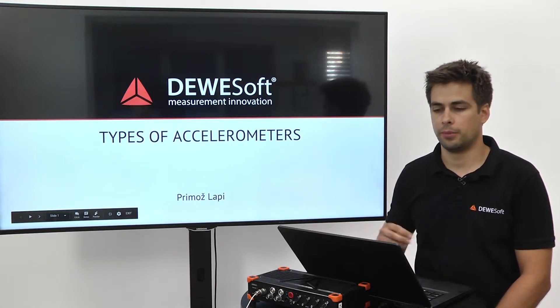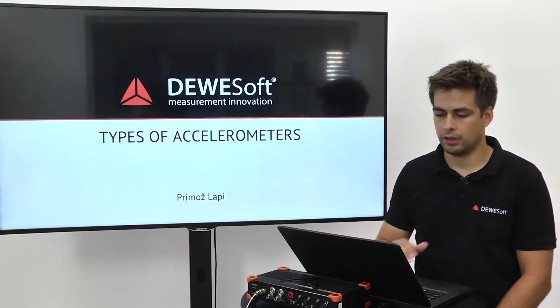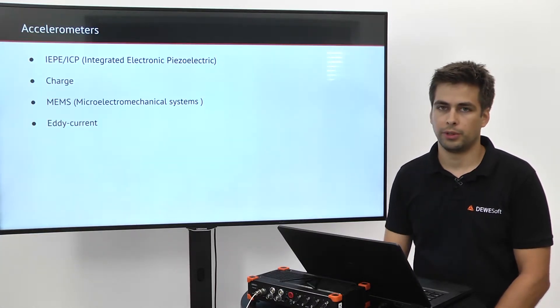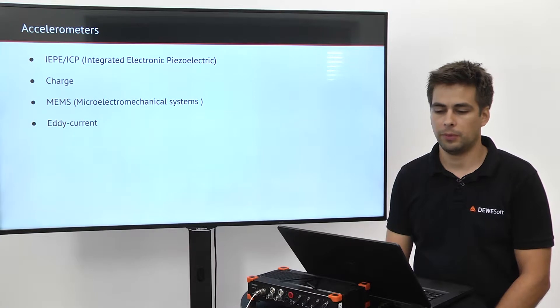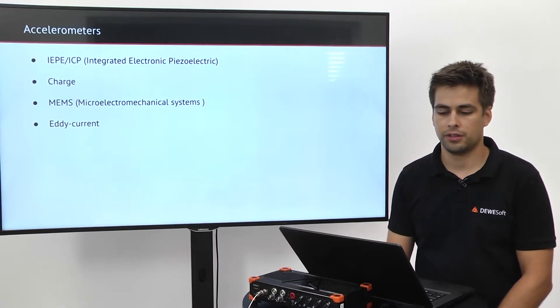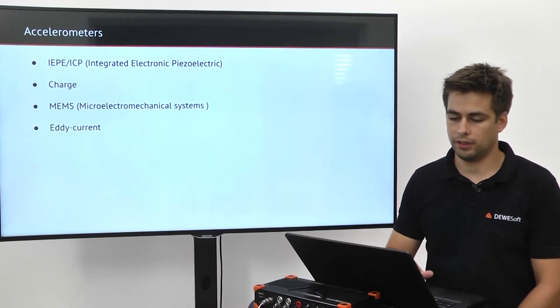Types of accelerometers. We know four types of accelerometers: IAPE, charge, MEMS, and eddy current.